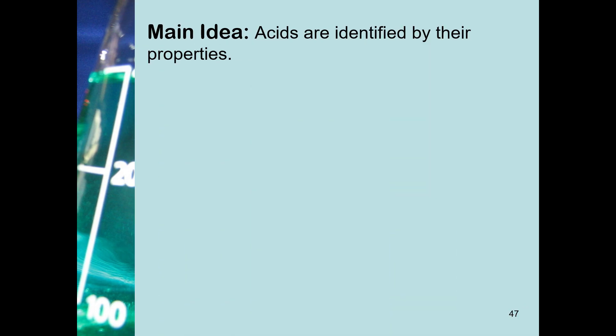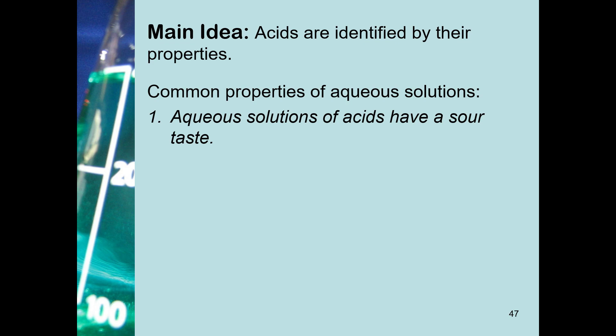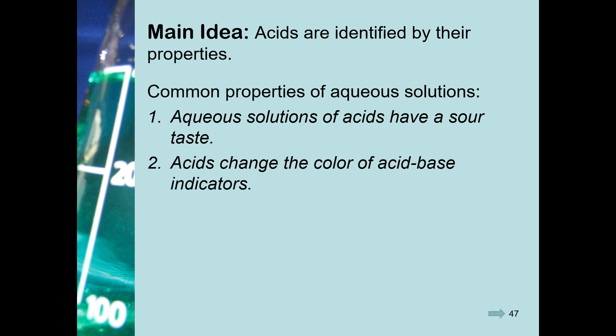Acids are identified by a set of properties they all have in common. The first property is that they have a sour taste. Some acids used in the food industry do have a sour taste. Acids also change the color of acid-base indicators — organic dyes that change from one color to another depending on whether they are placed in an acid or a base. We'll talk more about that in detail later.